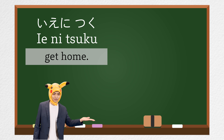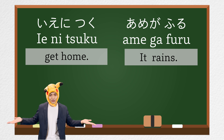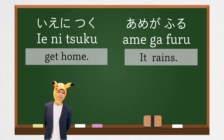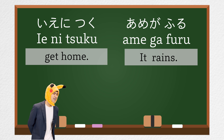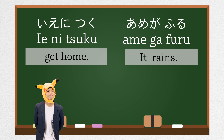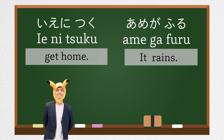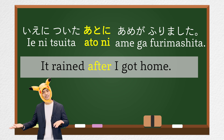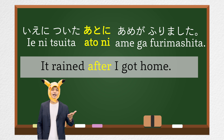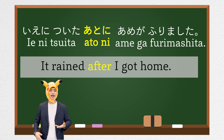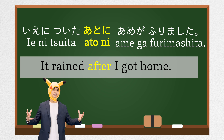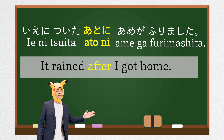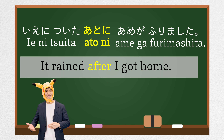One more! Action 1 is 家につく (arrive home), and then action 2 is 雨が降る (it rains). Action 1 must use past tense, 家についた. The answer is 家についたあとに雨が降ります, or 家についたあとに雨が降りました if the whole story is in the past. Both are correct!